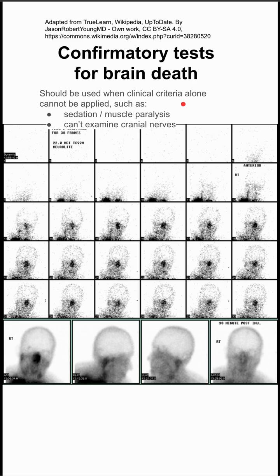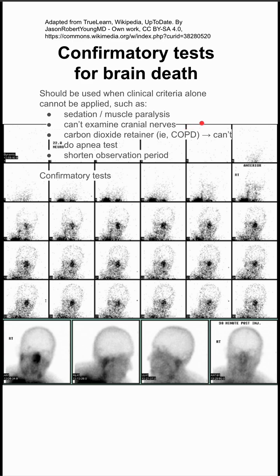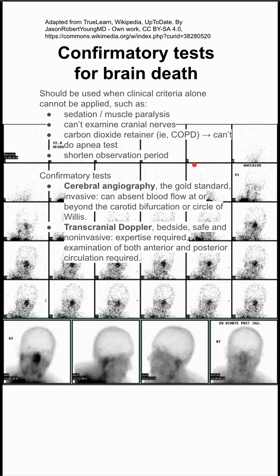If the patient is heavily sedated or has muscle paralysis, if you can't otherwise examine the cranial nerves, if a patient is a carbon dioxide retainer such as if they have COPD and they can't do an apnea test, and if you want to shorten the observation period instead of waiting a week or so for sedation to wear off, you might do this confirmatory test.